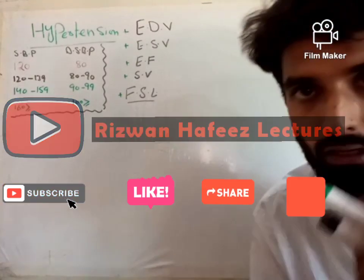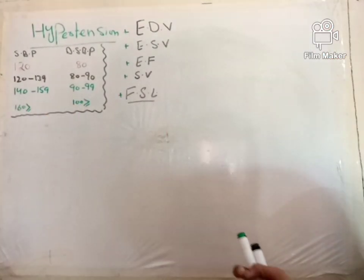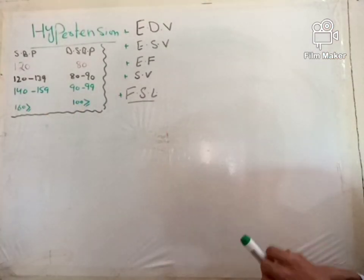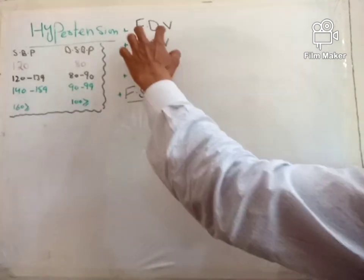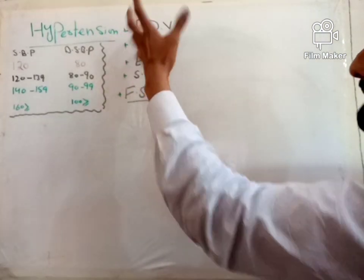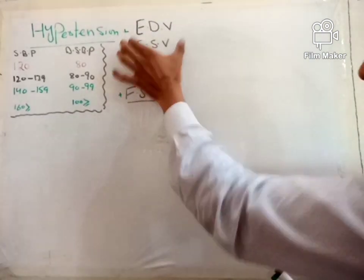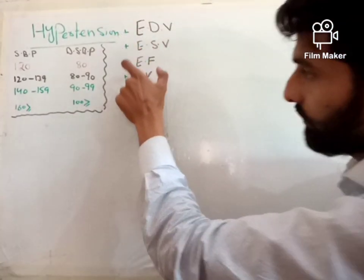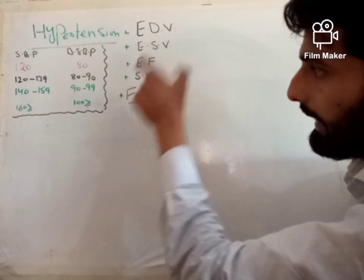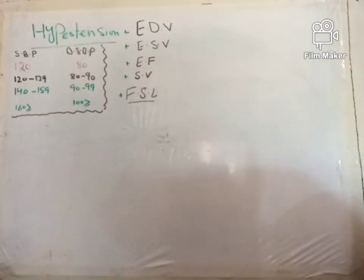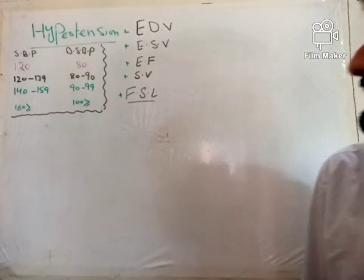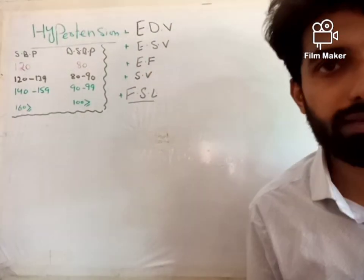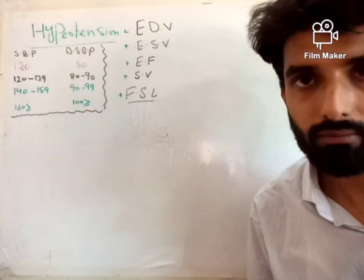Welcome back. Now let's discuss some important terms which include end diastolic volume, end systolic volume, ejection fraction, stroke volume, and at the end, Frank-Starling law.